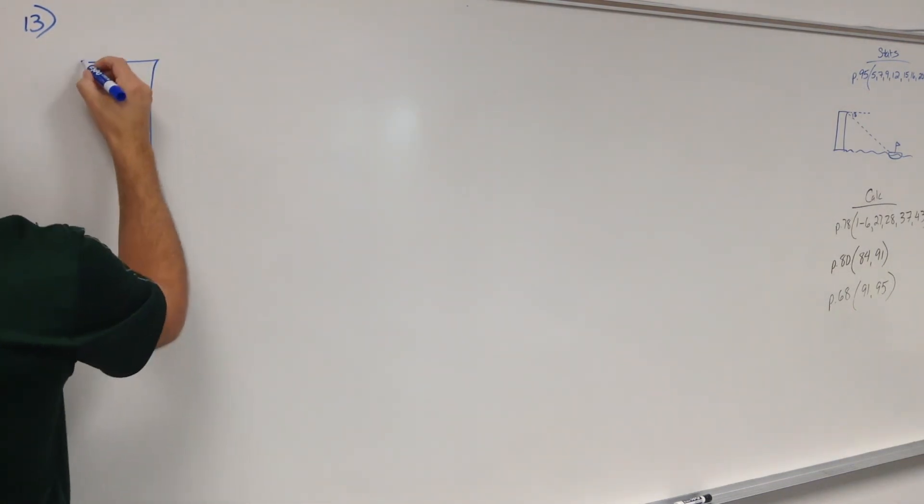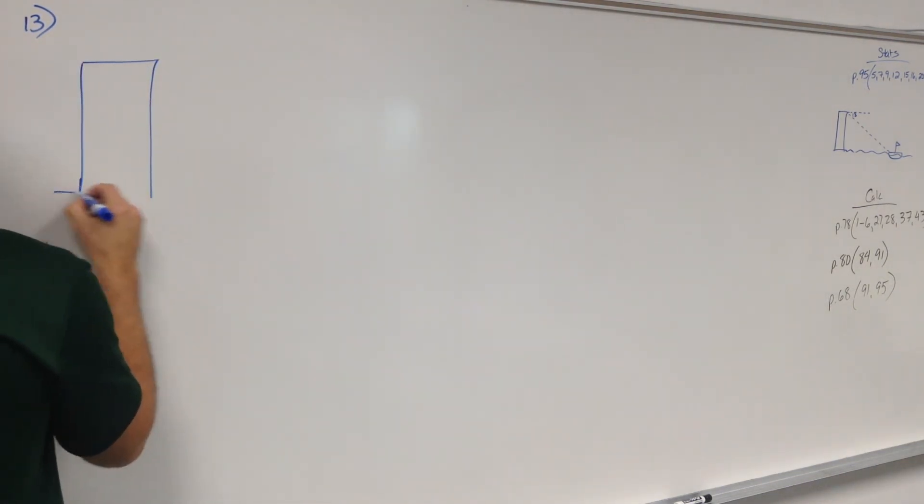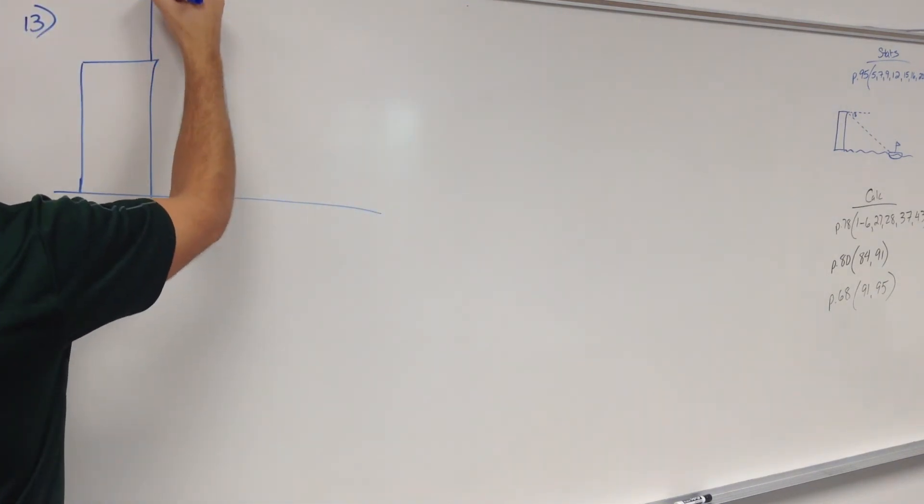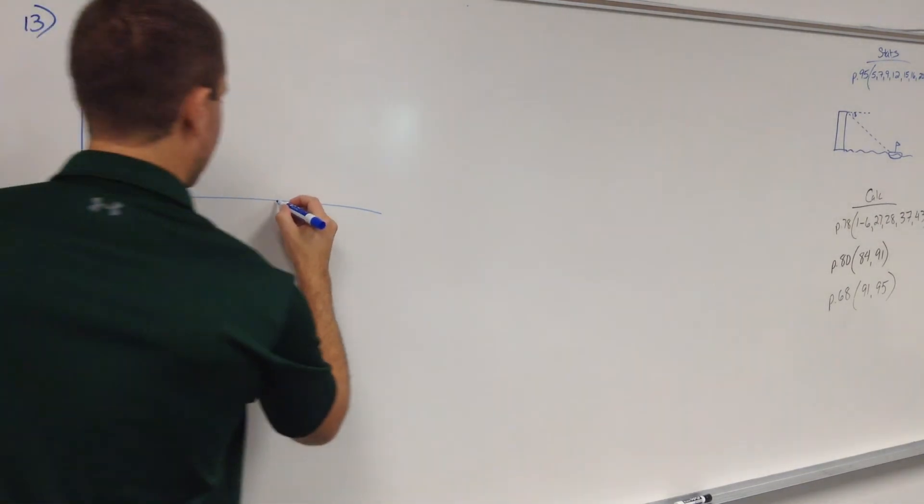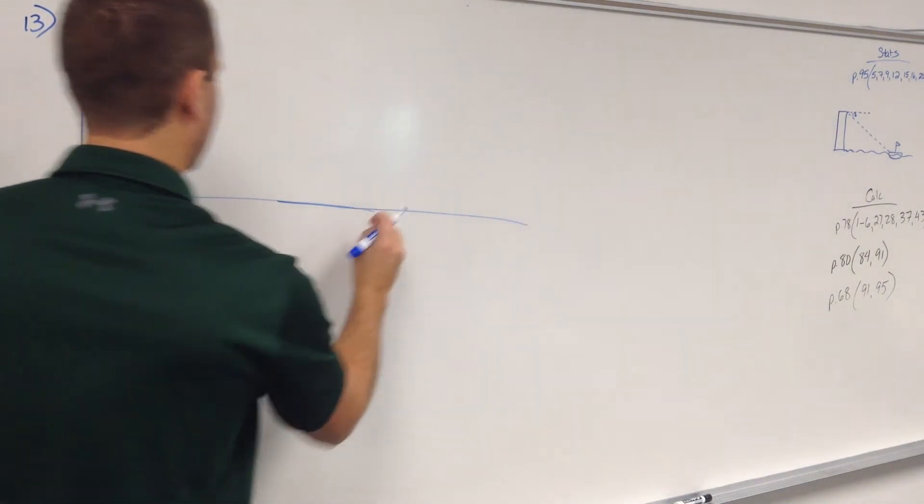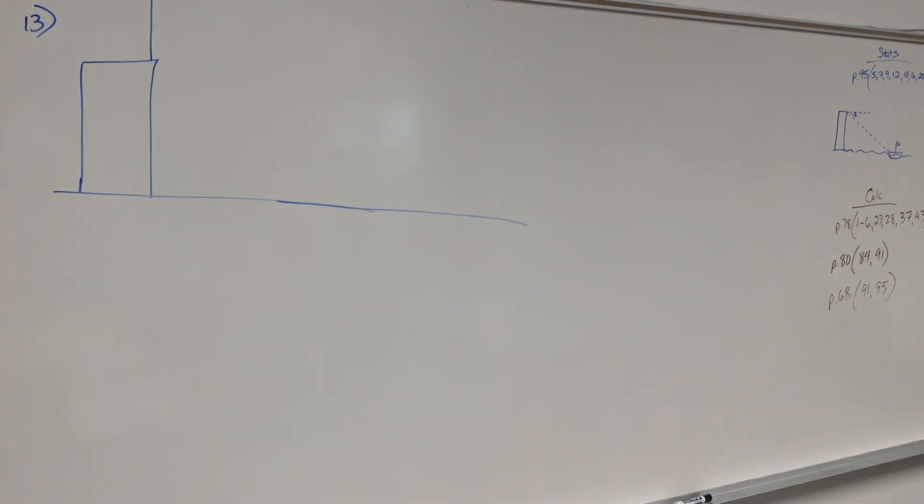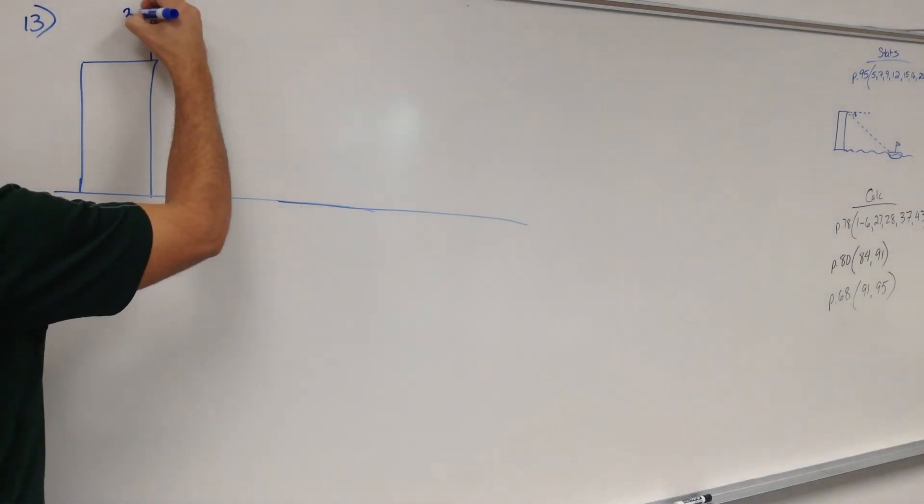The question was about problem number 13. It says something along the lines of there is a flagpole sitting on top of a building. So there is a certain length flagpole sitting on top of a building. I'm going to say that it is 30 feet. Yours obviously is different.